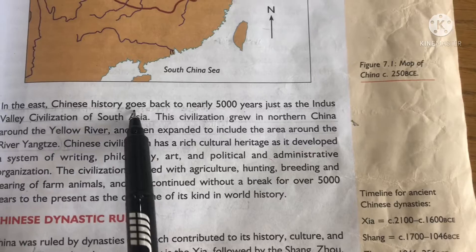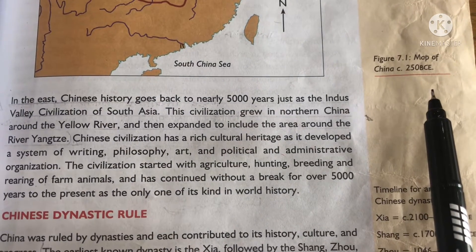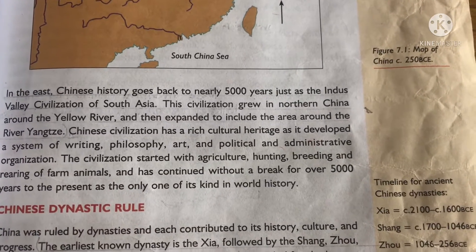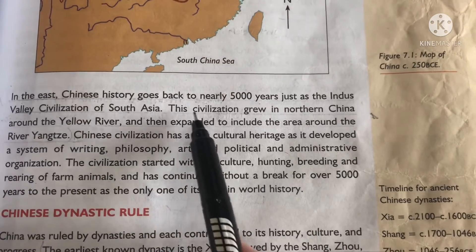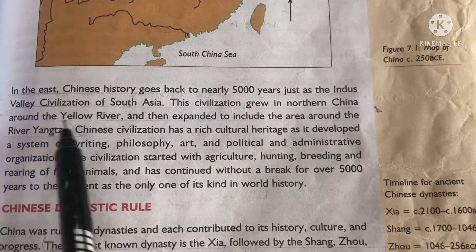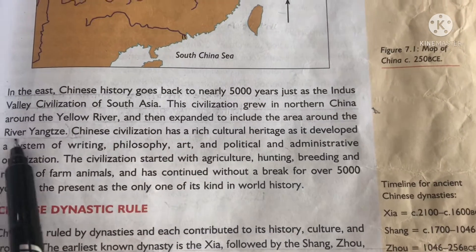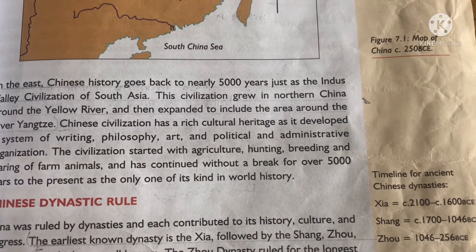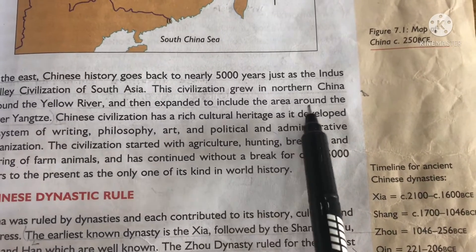In the east, Chinese history goes back to nearly five thousand years, just as the Indus Valley civilization of South Asia. In simple words, Chinese civilization is as old as the Indus Valley civilization. This civilization grew in northern China around the Yellow River and then expanded to include the area around the River Yangtze.